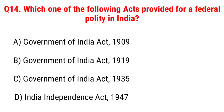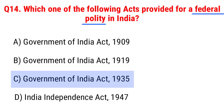Next question: which one of the following acts provided for a federal polity in India? Option A, Government of India Act 1909; B, Government of India Act 1919; C, Government of India Act 1935; D, Indian Independence Act 1947. The right answer is Option C, Government of India Act 1935.